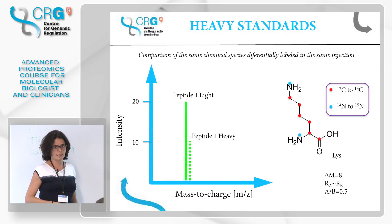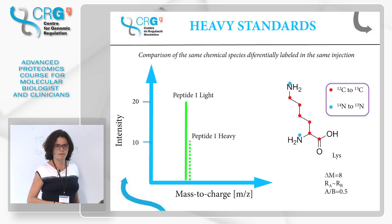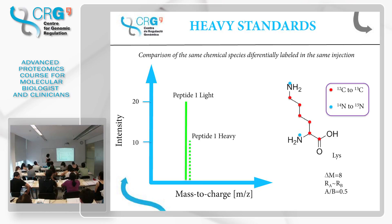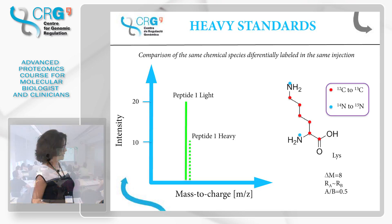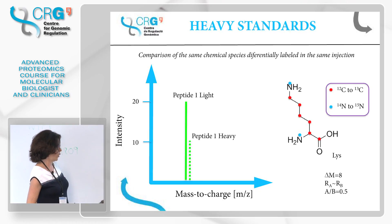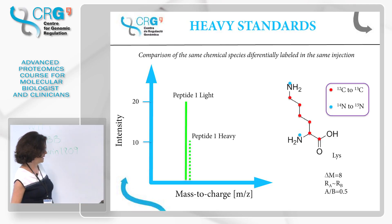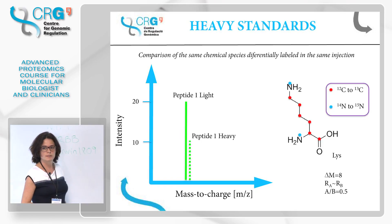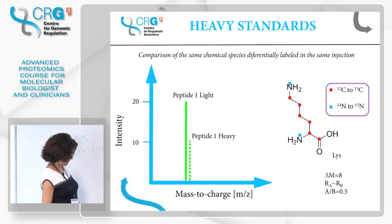Another strategy is to use heavy standards — peptides modified with heavy isotopes. For example, lysine can be modified so that all carbon-12s become carbon-13 and all nitrogen-14s become nitrogen-15. The delta mass from a standard lysine and this modified lysine is eight Daltons. They are almost the same compound; the only difference is the isotopic composition, but the response is very similar and we can still compare the two intensities. These are the two main strategies we use.